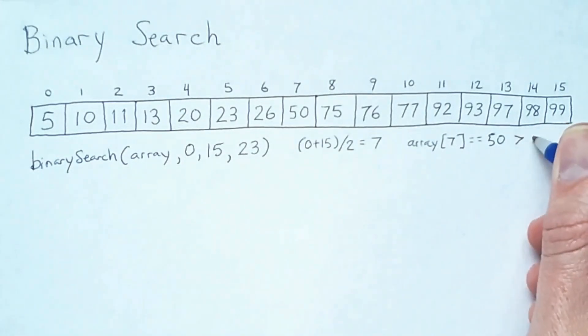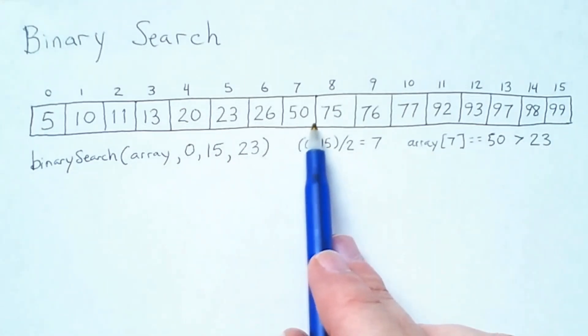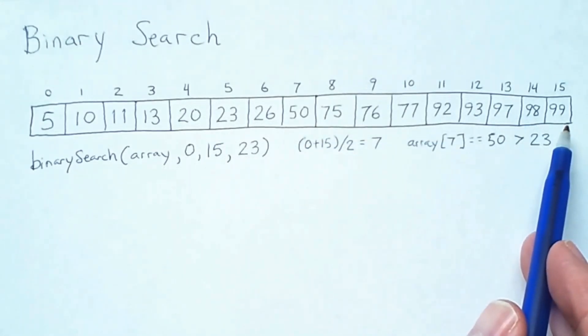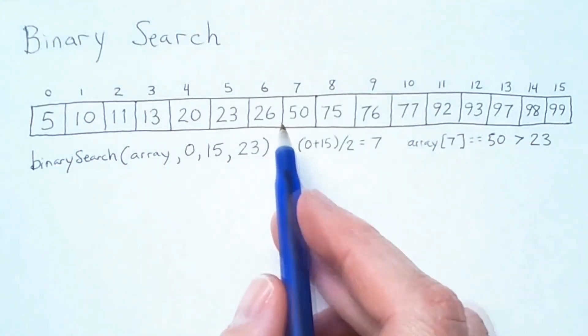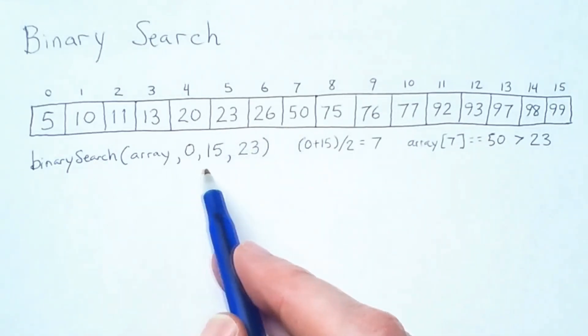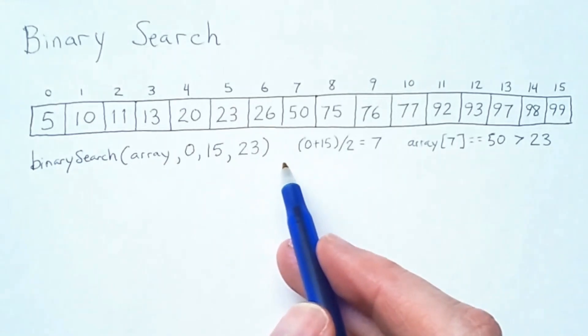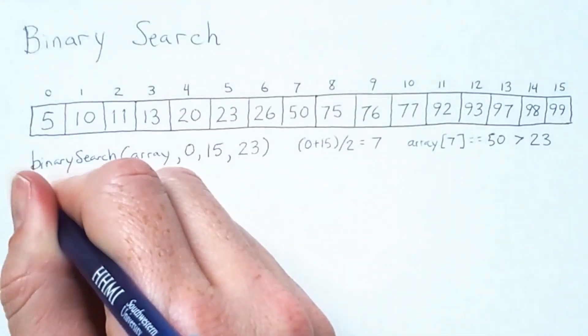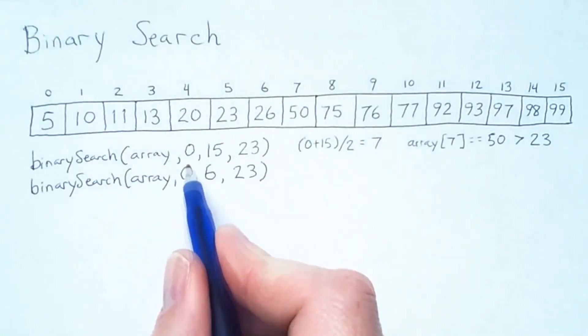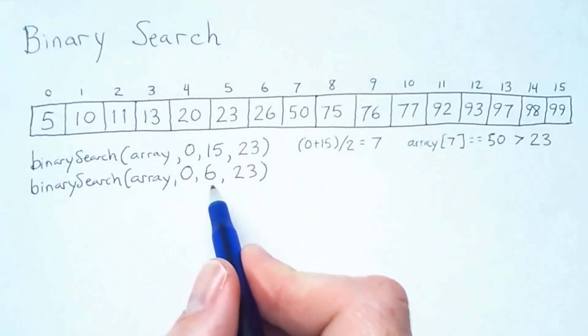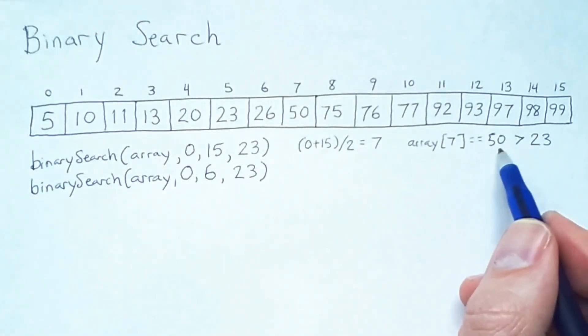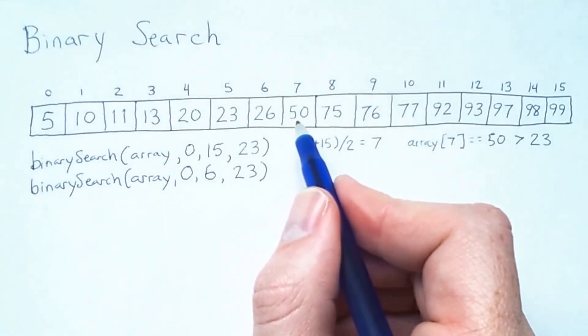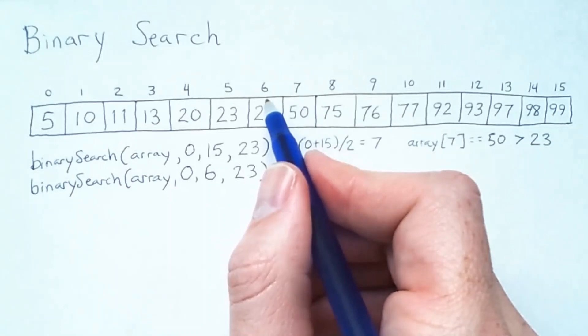Array index 7 equals 50, but 50 is greater than 23, which is what we're searching for. It is impossible for 23 to be anywhere to the right of the 50, because we know the array is sorted. If 23 is in the array, it has to be to the left of the 50. So this algorithm will recursively search the sub-range of the array that is to the left of 50. The lower bound of our range remains the same, still 0, but the upper bound decreased. We know that 23 has to be to the left of 50, which is at index 7. Therefore, the upper bound of our sub-range will be the index to the left of the 7, which is 6.